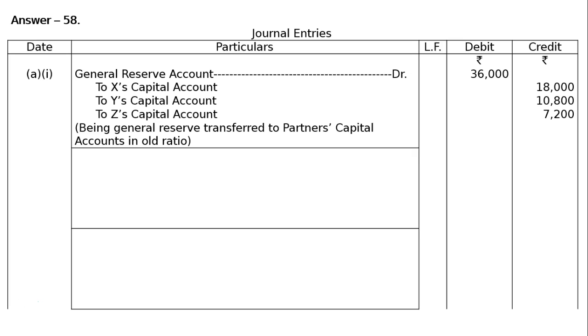General Reserve is a liability balance. It is an undistributed profit. It is to be debited for cancellation and credited to old partners in old profit sharing ratio.